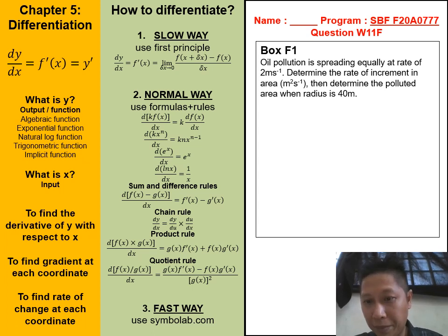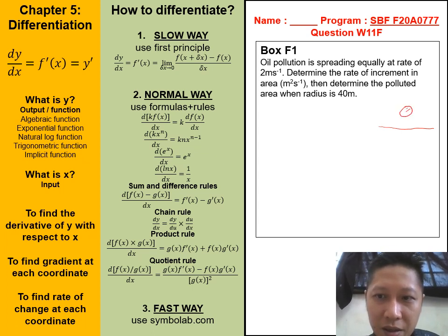For the first half of the paper, we're going to have a box written box F1 and then copy the questions. The question sounds like this. Oil pollution is spreading equally at rate of 2 meters per second. Determine the rate of increment in area. Then determine the polluted area when the radius is 40 meters. This is the ocean. And then we have oil pollution. The rate of expansion is 2 meters per second. We want to determine what is the increment in area.